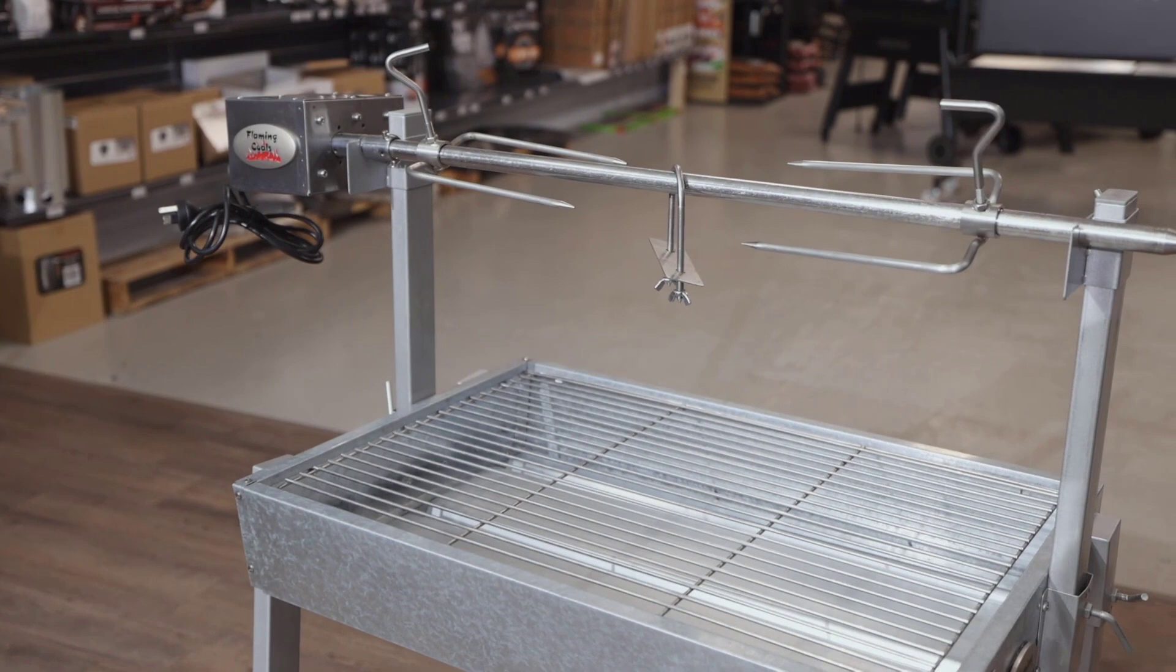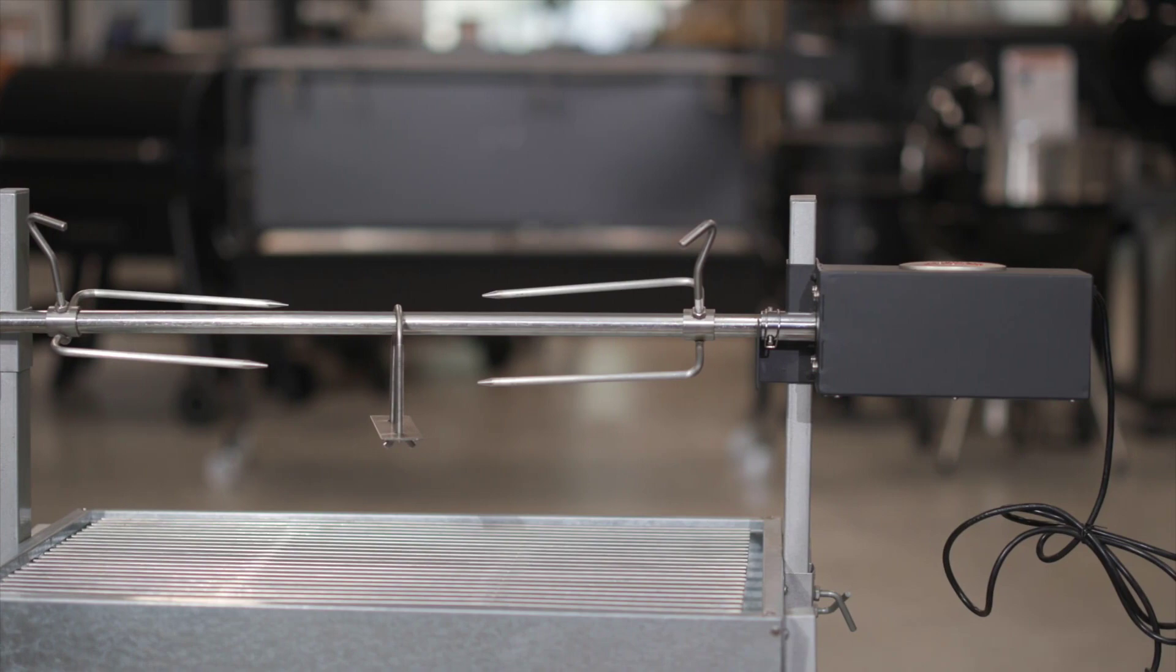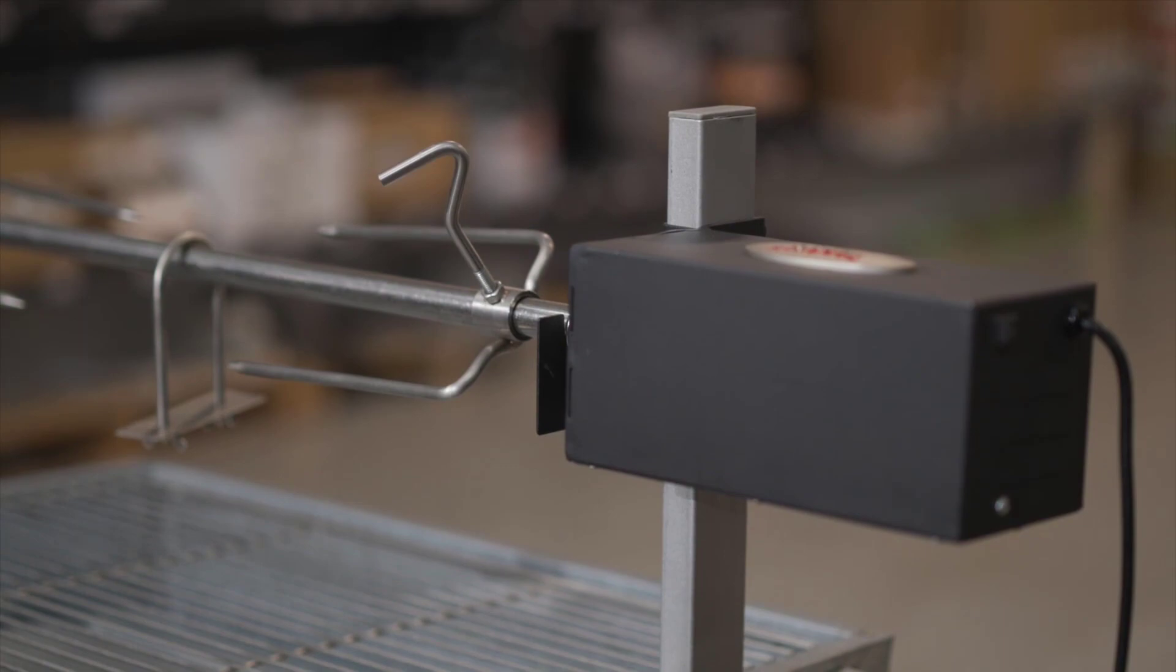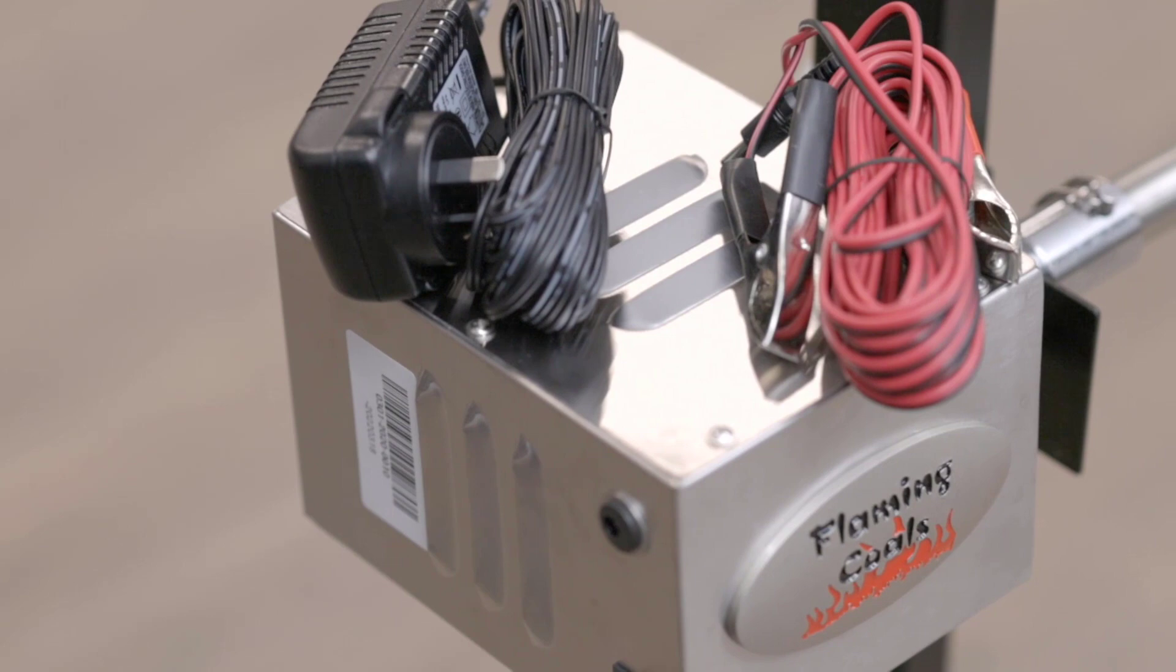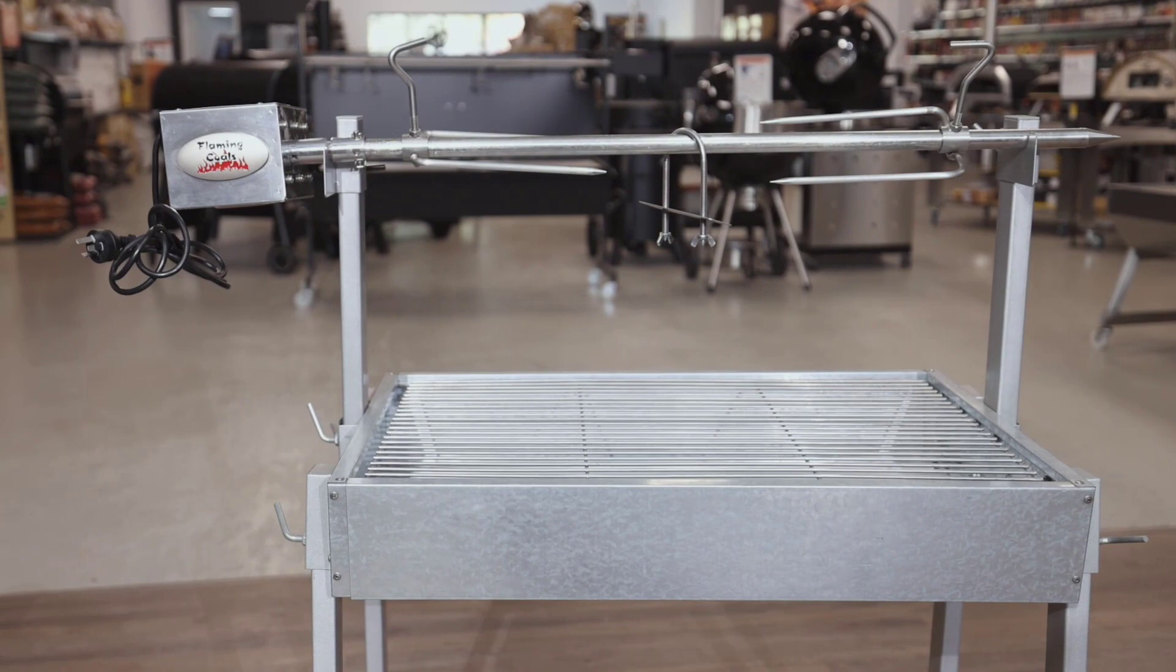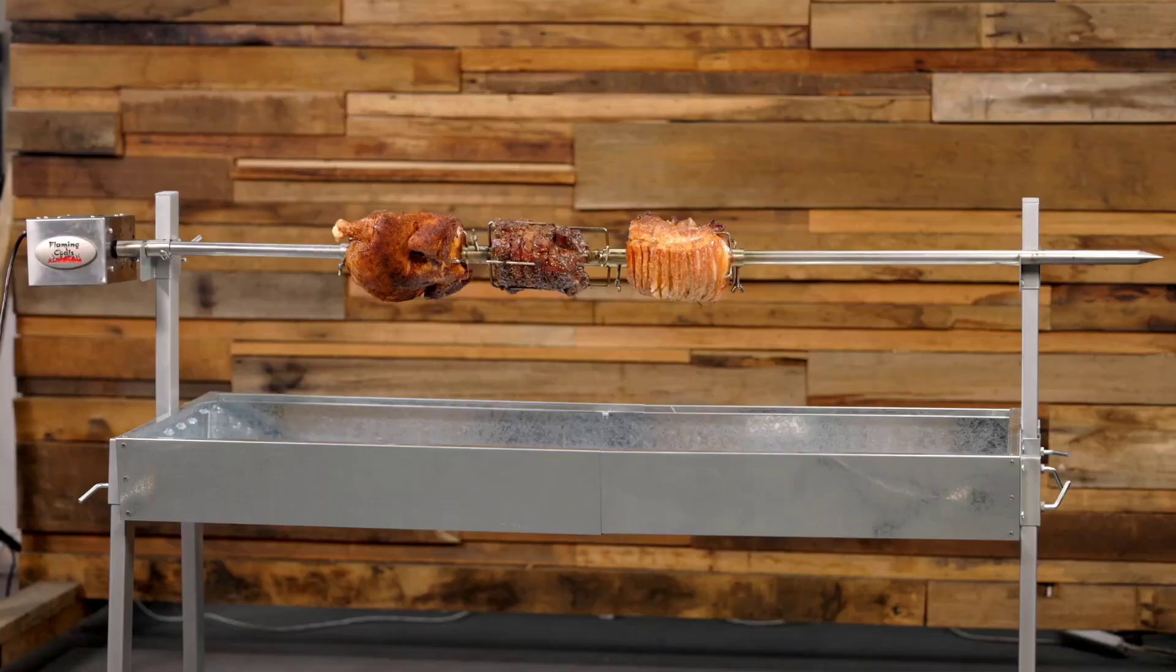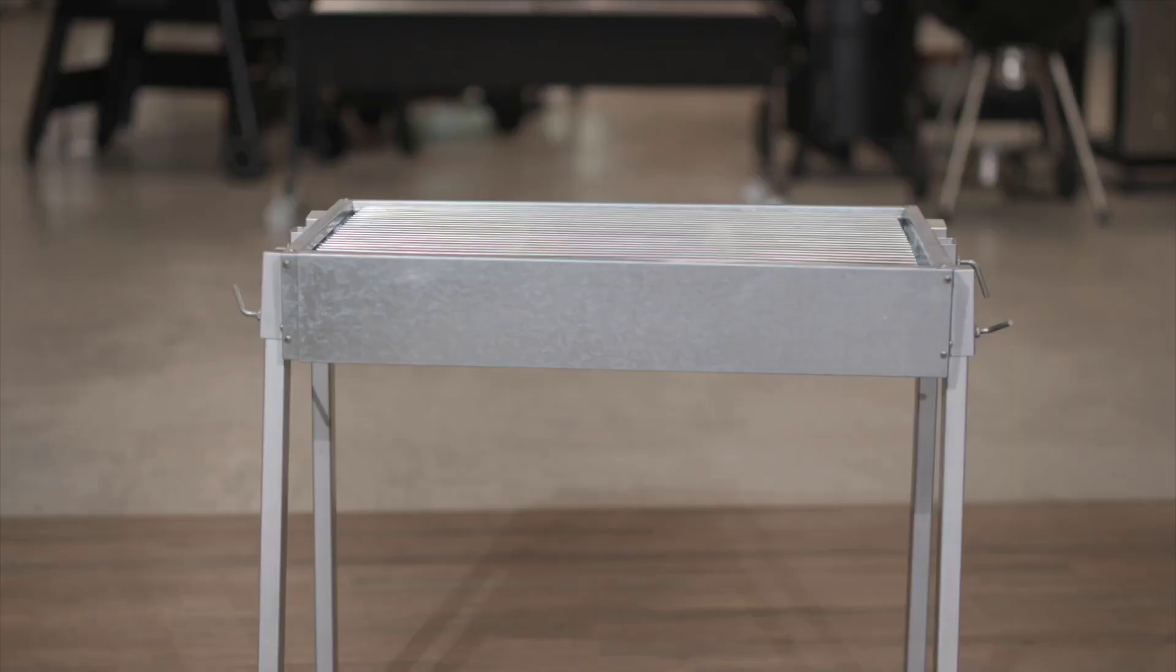The Extendable Spit Roaster comes standard with a 30kg rated 240V motor. Although not necessary, motor upgrades are available to either a 60kg or 100kg motor. Alternatively, there is also a 20kg rated 12V motor available if you want to take the rotisserie camping and run the motor off a car battery. The standard 240V 30kg motor is extremely efficient and can easily be run off an inverter if mains power isn't available.